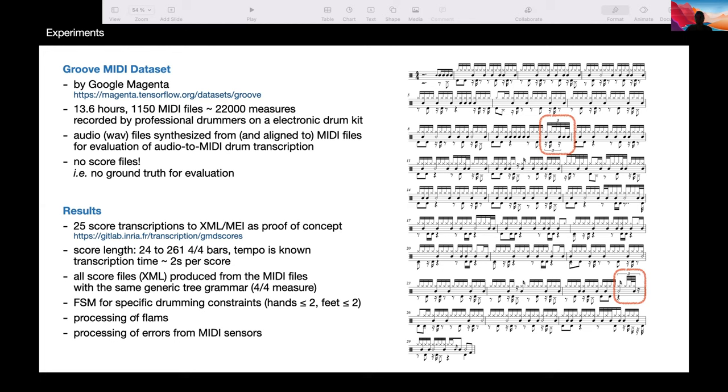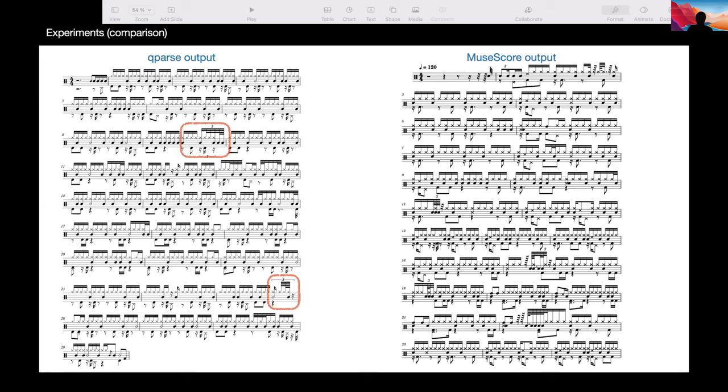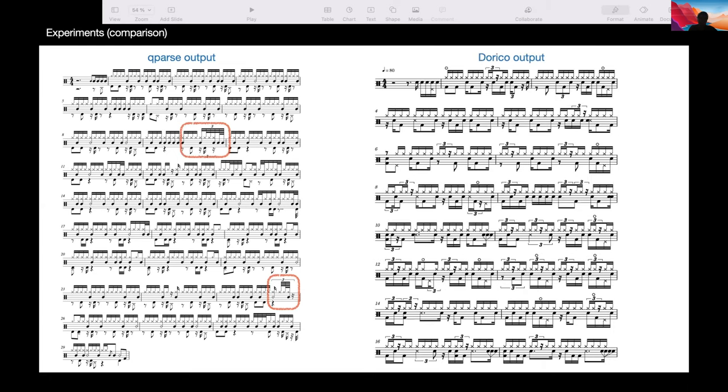This is one example of the results that we obtained. It's not perfect. We are now working on making it better. There are in particular some triplets that should not be here according to experts. I forgot to mention that one of the authors is a professional drummer. But there are not so many mistakes, to compare for instance with what we obtained with MuseScore, when we input the MIDI in MuseScore. Our result is better. As you see here, there are many triplets and many strange behaviors. And also we tried with Dorico and the input is even worse with Dorico.